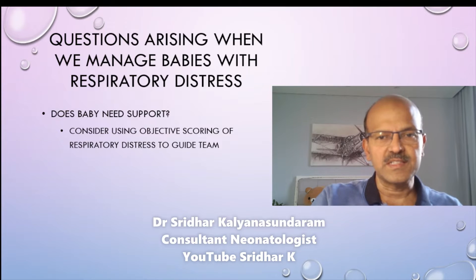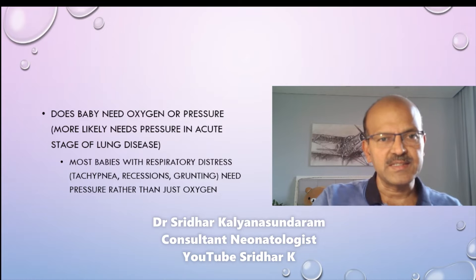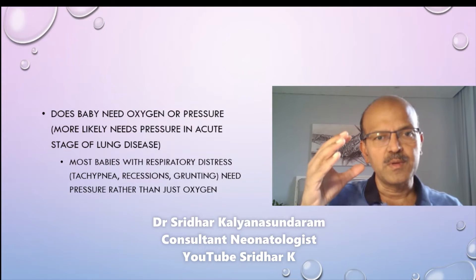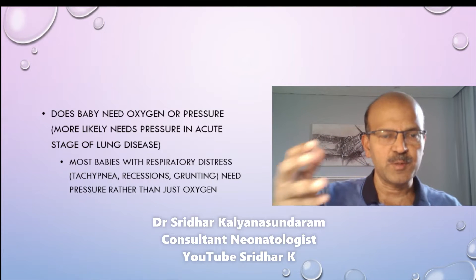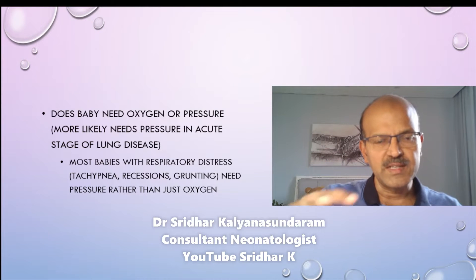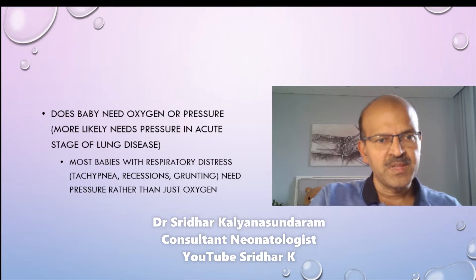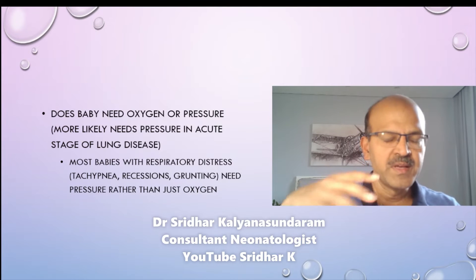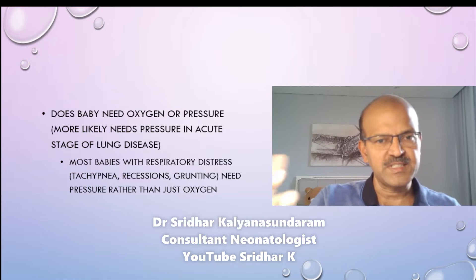Once we have confirmed the baby has respiratory distress and needs support, the main objective is to correct the ventilation requirements through oxygenation and carbon dioxide exchange. During the acute phase, the lung tends to be stiff, so pressure is more likely needed. Oxygen alone will not cure the problematic pathophysiology because you need to open up the closed lungs. You may improve saturation with oxygen, but that won't relieve the condition — you may end up in a vicious cycle that worsens. Most babies with tachypnea, recessions, and grunting need pressure rather than oxygen. Giving oxygen alone through a nasal cannula does not help; you need some form of pressure, either non-invasive or invasive.